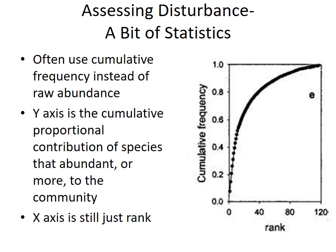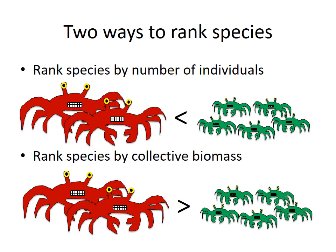Species can be ranked either by number of individuals or by collective biomass, and this distinction matters. For example, with green crabs and red crabs: green crabs rank first by number of individuals, but red crabs rank first by collective biomass because, despite fewer individuals, their larger body size means they weigh more in total. This distinction between numerical rank and biomass rank is important for abundance-biomass comparison plots.